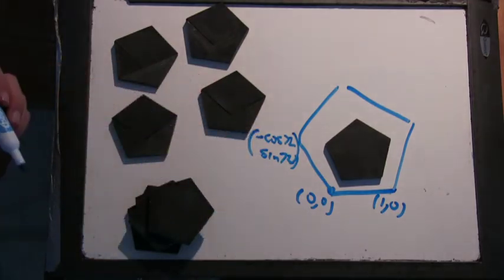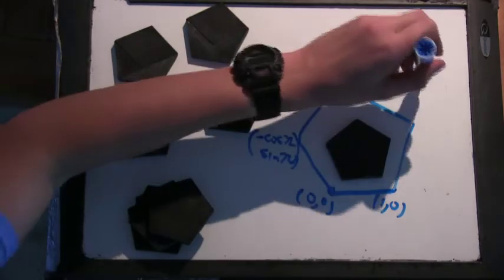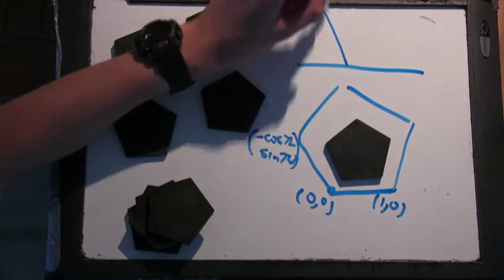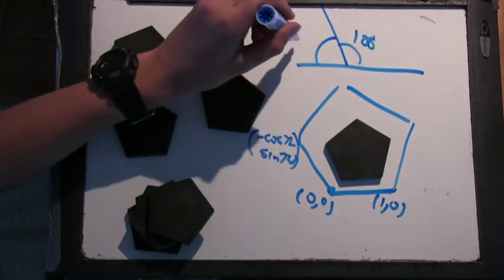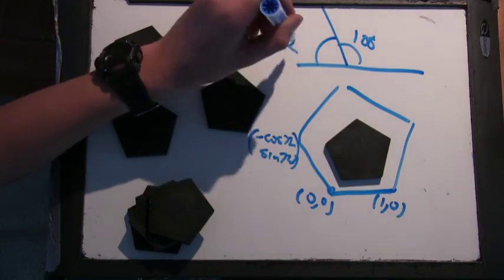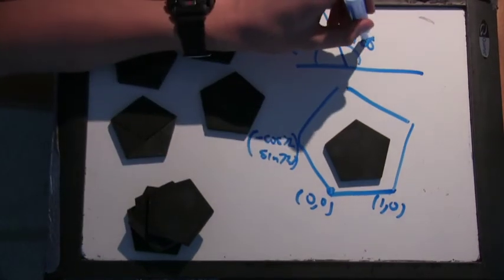And where did that minus sign come from? Because when you have that angle, it's either cosine 108 or minus cosine 72. And they're the same.